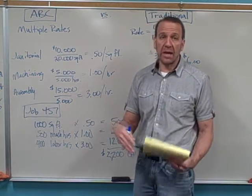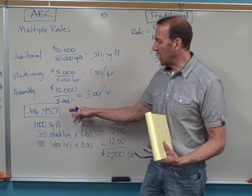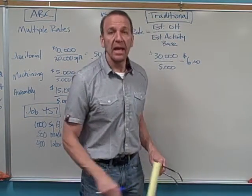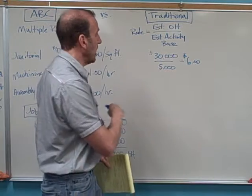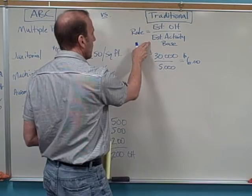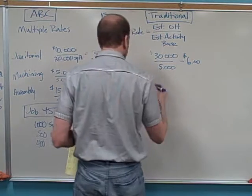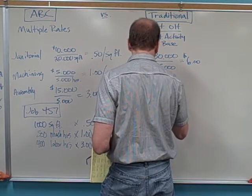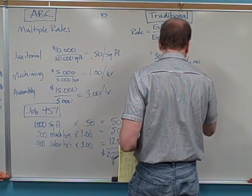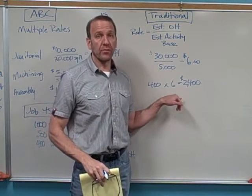And then plus we'll calculate the labor rate. So there will also be labor and materials that go into job 457. But this is how much overhead we're going to allocate to this job. If this company wasn't using activity-based costing and instead was using the traditional approach, they would use, I told you before that our activity base on this one was labor hours. So there were 400 labor hours times the rate of $6, which gets us $2,400. So under this approach, they'd be allocated more overhead.